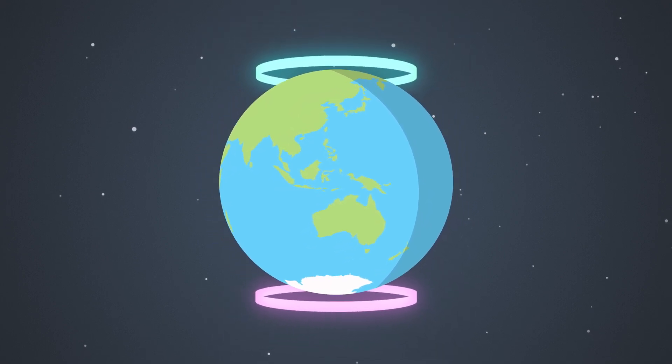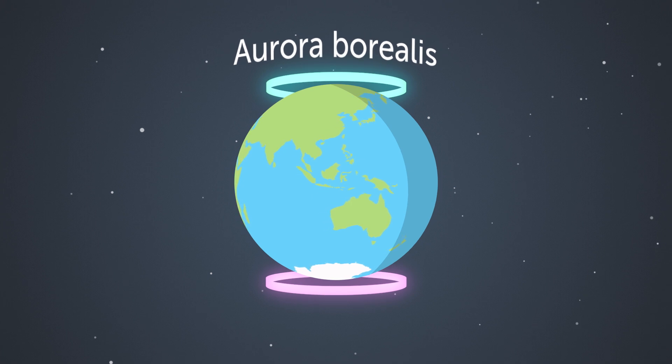The auroras in the northern hemisphere are called aurora borealis, southern lights are called aurora australis. Australis comes from the Latin word for southern.